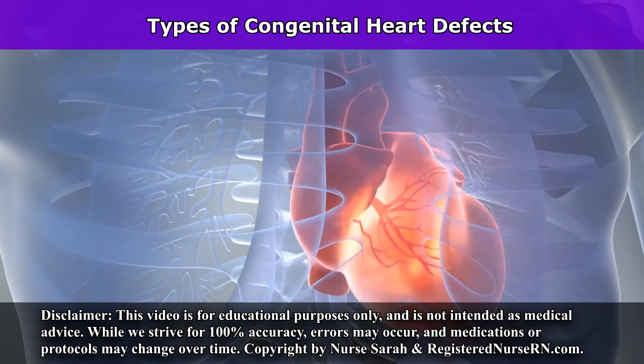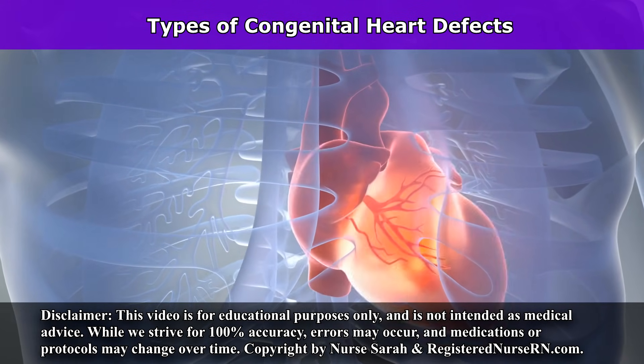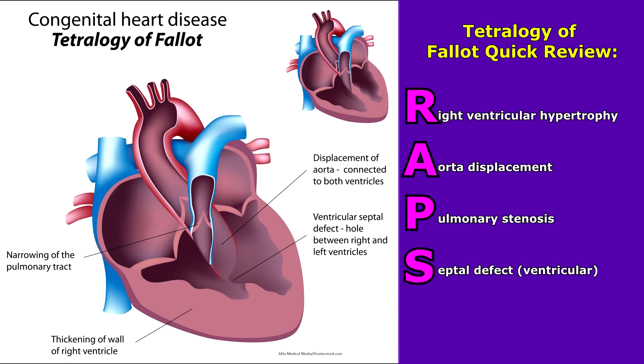Let's go over the different types of congenital heart defects. First is tetralogy of Fallot. With this, you're going to have four abnormalities.